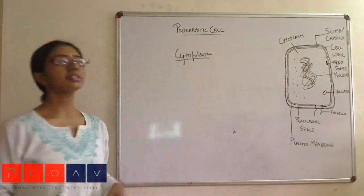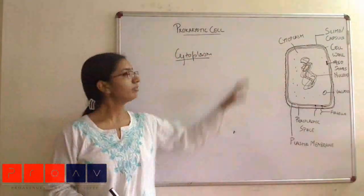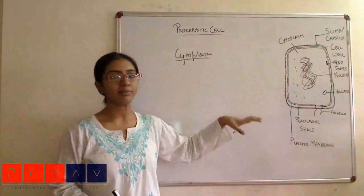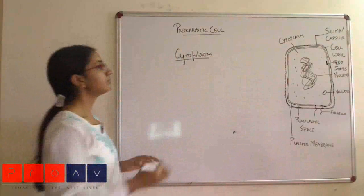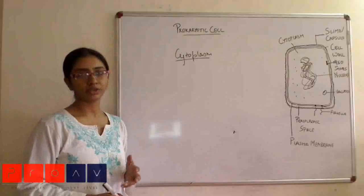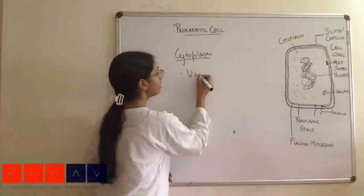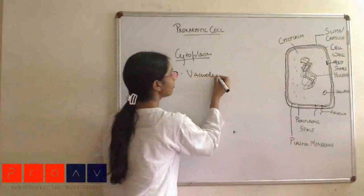Since in the prokaryotic cell all the functions of the organelles are performed generally by the plasma membrane, the cytoplasm does not have most of the complex structures that are present in the eukaryotic cell. But there are still certain things that are present, such as certain kinds of vacuoles.